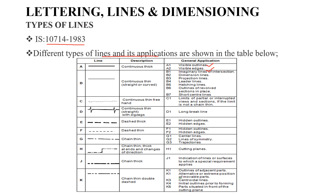The next type is continuous thin lines. These are used for imaginary lines of intersection, dimension lines, projection lines, leader lines, hatching lines, outlines of revolution sections in place, and short center lines.